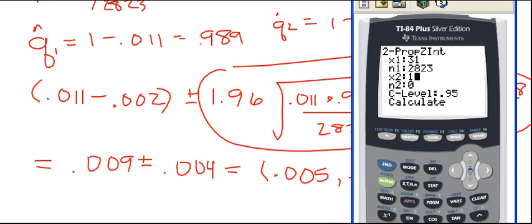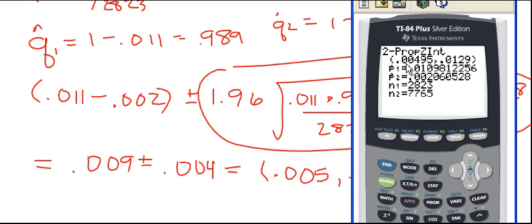X2 is the number in the second group, so that was 16. N2 is the sample size for the second group, so 7, 6, 5. Then I have a confidence level of 95. That's what I want. And then I just go to calculate and hit enter.